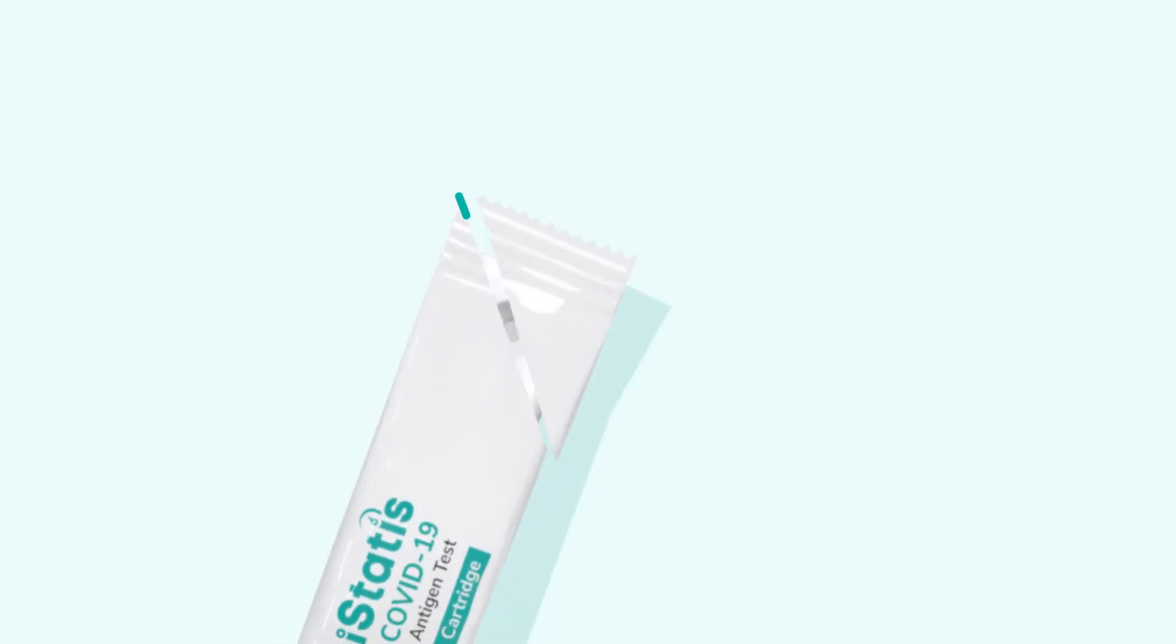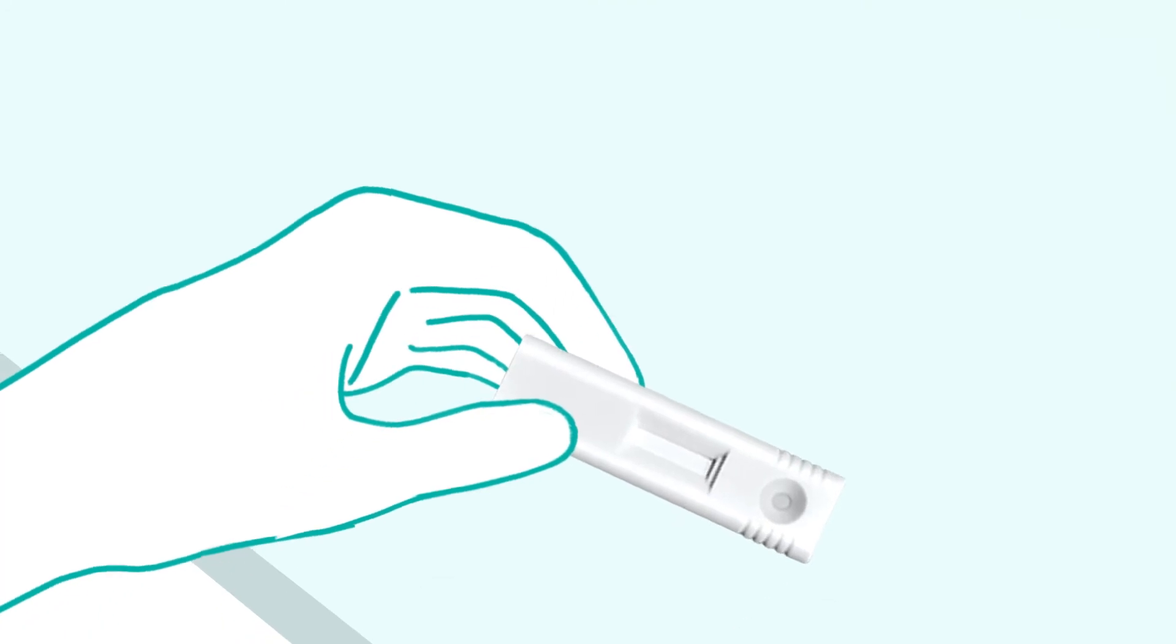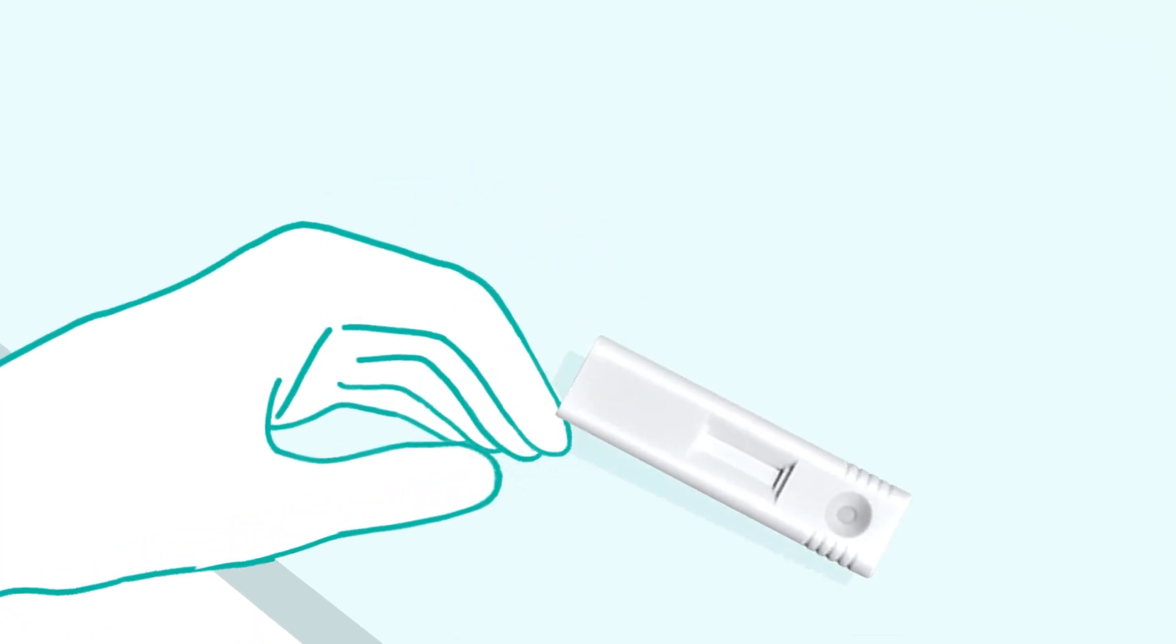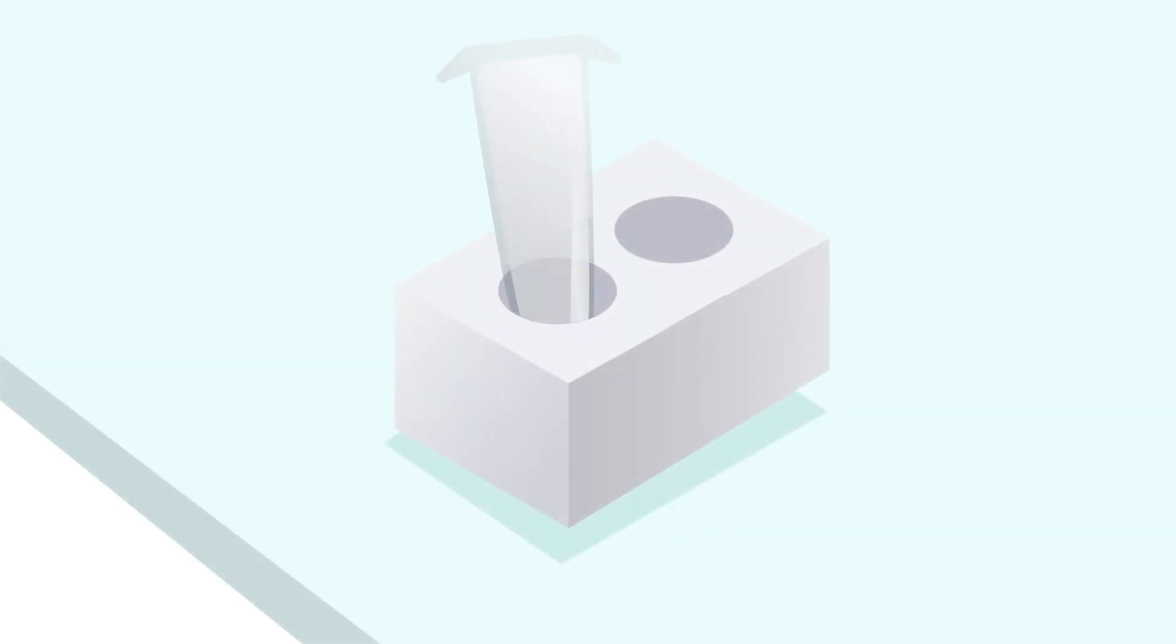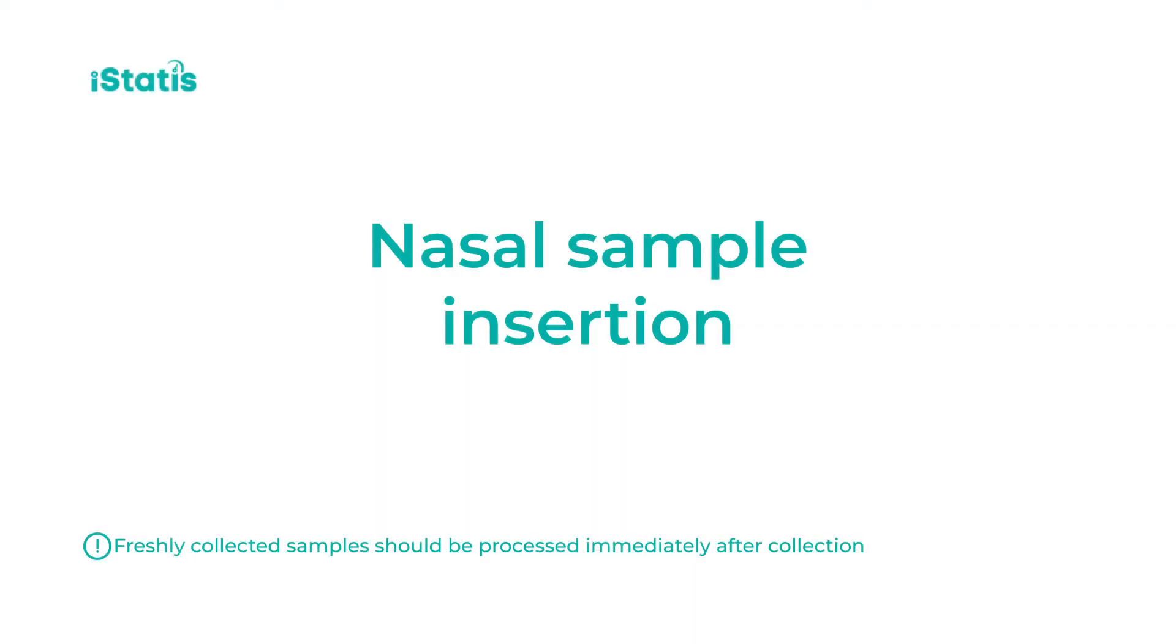Next, remove the test cartridge from its packaging and lay it flat on the table. Tear off the foil seal of the buffer vial and place the buffer vial into the vial holder.